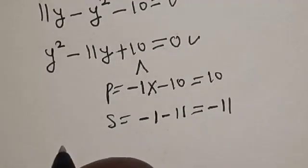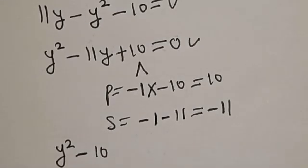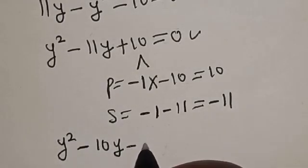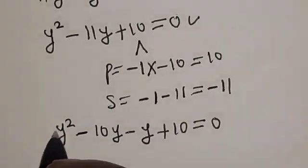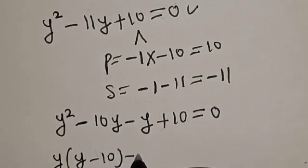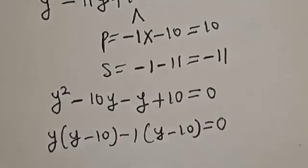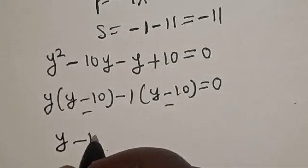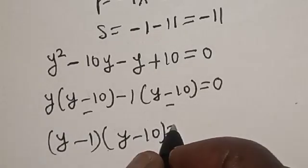So, let's make use of this. We have y squared minus 10y minus y plus 10 is equal to 0. Now, let's bring y out here: y(y minus 10) minus 1(y minus 10) is equal to 0. Then, y minus 10 is common here.